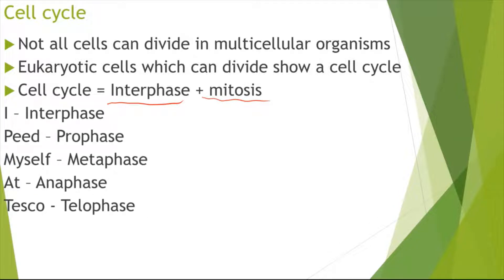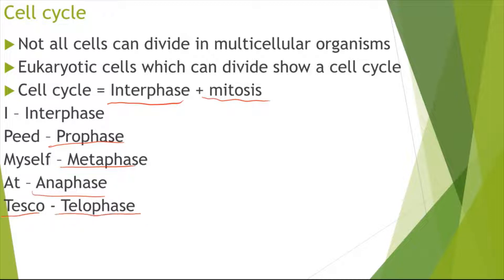There are basically five stages to the cell cycle, and there's a very easy mnemonic to remember them: 'I peed myself at Tesco.' I for interphase, P for prophase, M for metaphase, A for anaphase, and T for telophase.